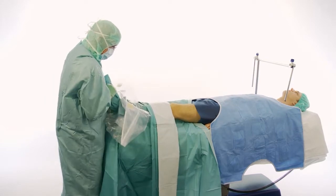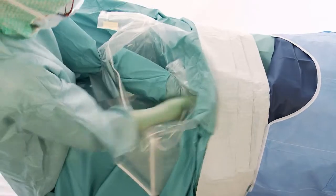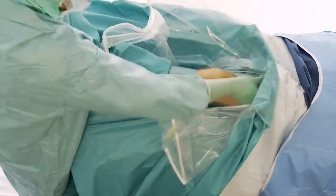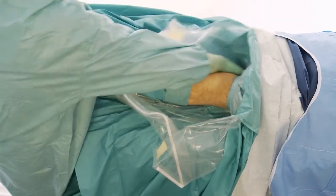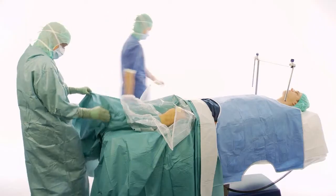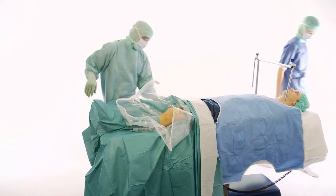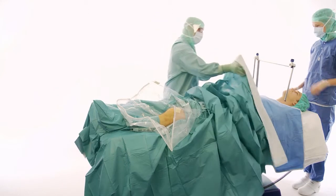Unfold the lower part of the drape under the patient's leg and place the two elastic openings around the knee. Unfold the upper part of the drape fully towards the head.